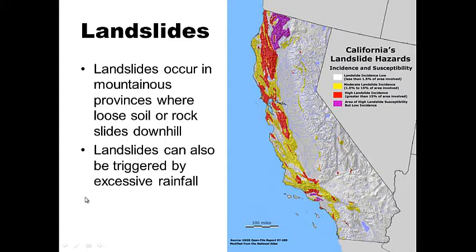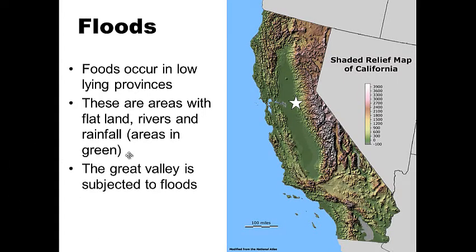Landslides occur where there's a lot of rain, which creates loose soil and rock that slides downhill. You don't get landslides in flat areas, so you can expect them in places with lots of rainfall. The Coastal Range gets a lot of this.